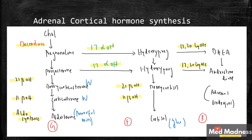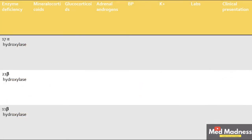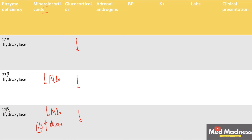Let's do a comparison of the three enzyme deficiencies. Glucocorticoids — cortisol — are always low in all three cases. For mineralocorticoids: in 21-beta and 11-beta hydroxylase deficiency, aldosterone is low, but importantly 11-deoxycorticosterone — a weak mineralocorticoid — is increased in 11-beta deficiency, and it can perform similar actions to aldosterone, though with less potency.